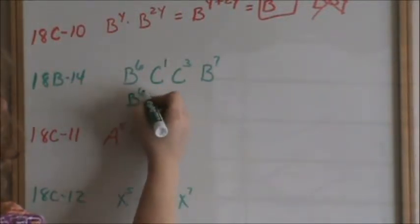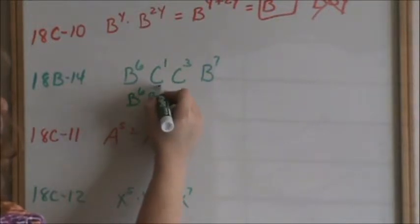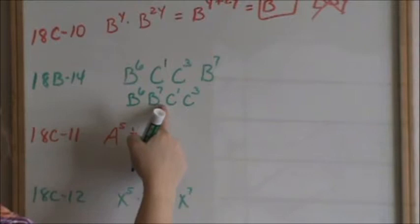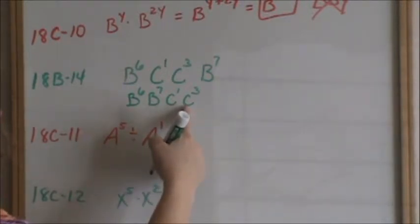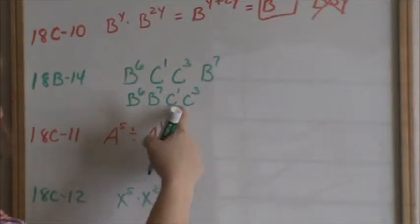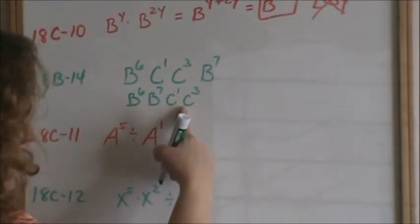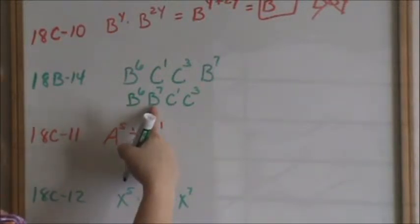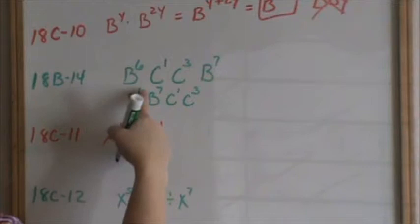If you want to rewrite b to the 6 and then b to the 7 next to each other, you can do that. Because everything is being multiplied, multiplication is commutative, which means you can move it around the operation side, and the answer is still the same when you move things around.